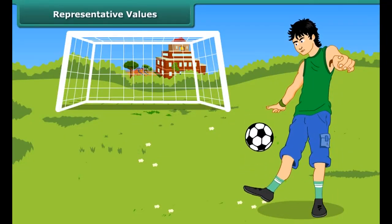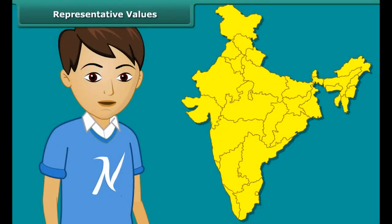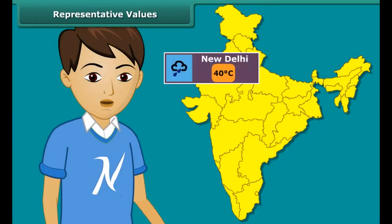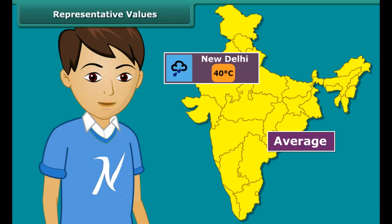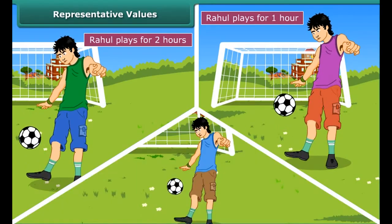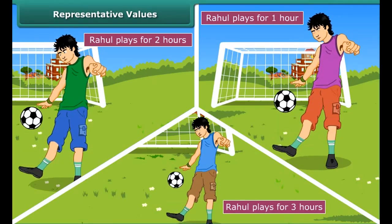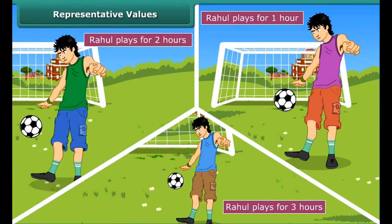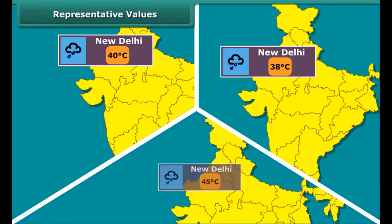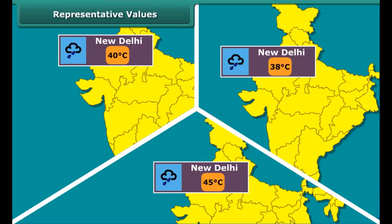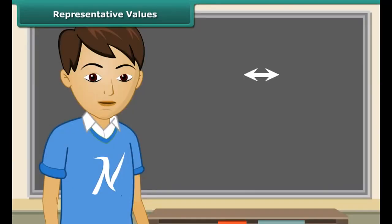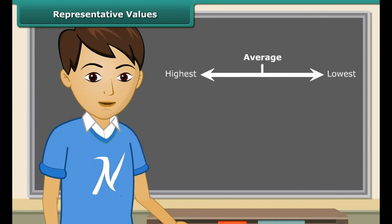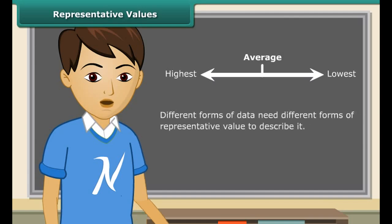Rahul spends on average about two hours daily for his outdoor games. The average temperature of New Delhi at this time of the year is about 40 degrees Celsius. By average, we understand that Rahul usually plays for two hours — on some days he may play for less, and on other days he may play longer. Similarly, the average temperature of 40 degrees Celsius means it is sometimes less and sometimes more. Thus, average lies between the highest and the lowest value of the given data.